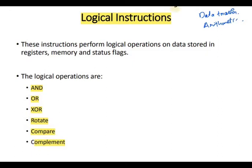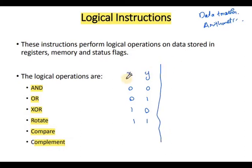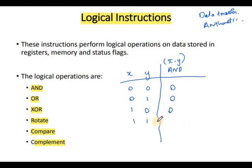We will discuss the basic AND operation. With inputs X and Y: 0,0 gives 0; 0,1 gives 0; 1,0 gives 0; and 1,1 gives 1. AND means X dot Y — it performs logical multiplication. So 0 into 0 is 0, 0 into 1 is 0, 1 into 0 is 0, and 1 into 1 is 1. For OR, it is logical addition.